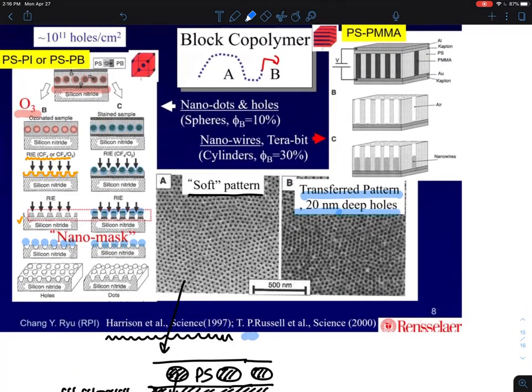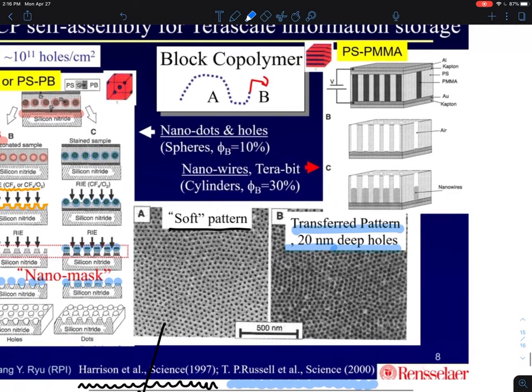The second noticeable effort was done by Tom Russell at UMass Amherst. He used polystyrene and polymethylmethacrylate. In this case, he was using cylinders. He applied electric field to make the polymethylmethacrylate stand up. Then he essentially etched PMMA, because PMMA can be degraded under UV light, and with selective dissolution, you can make it.